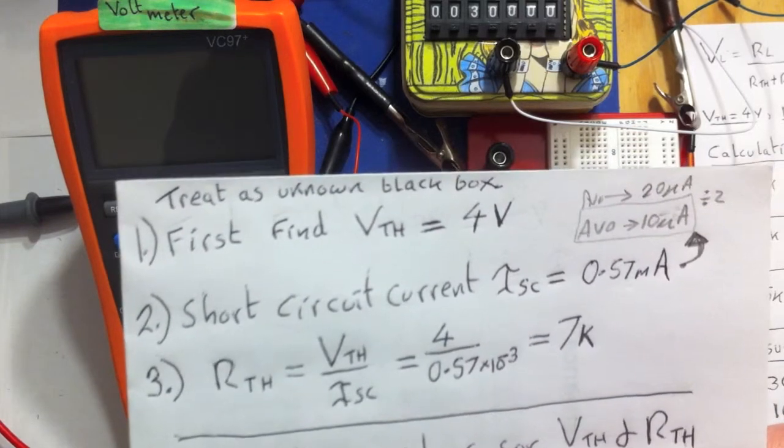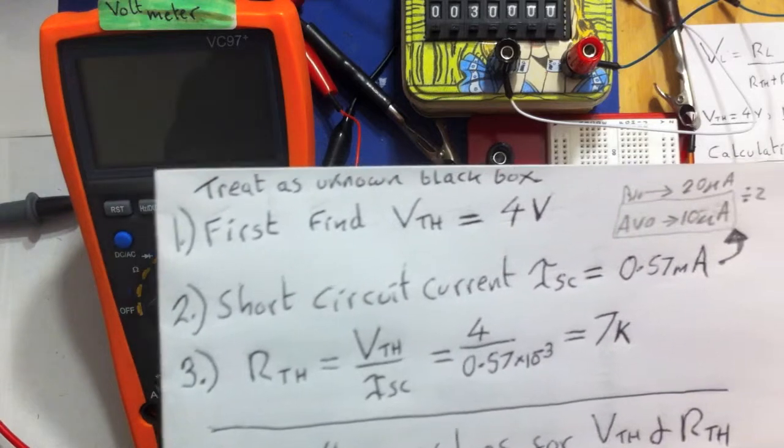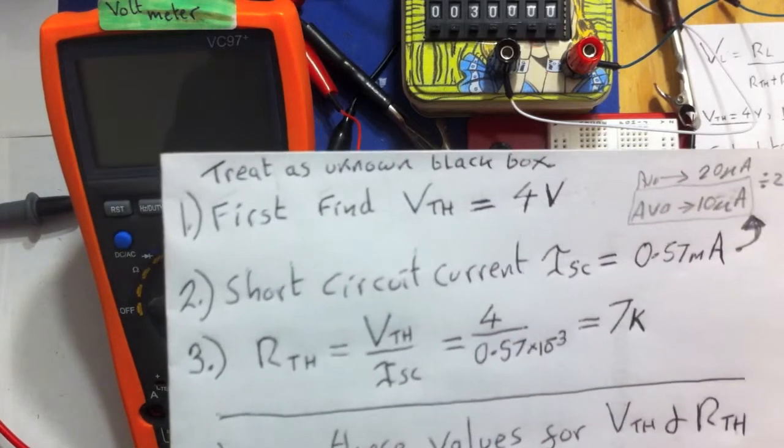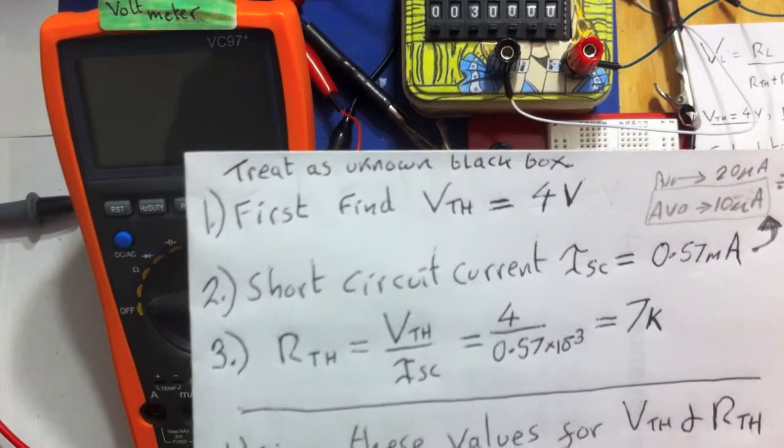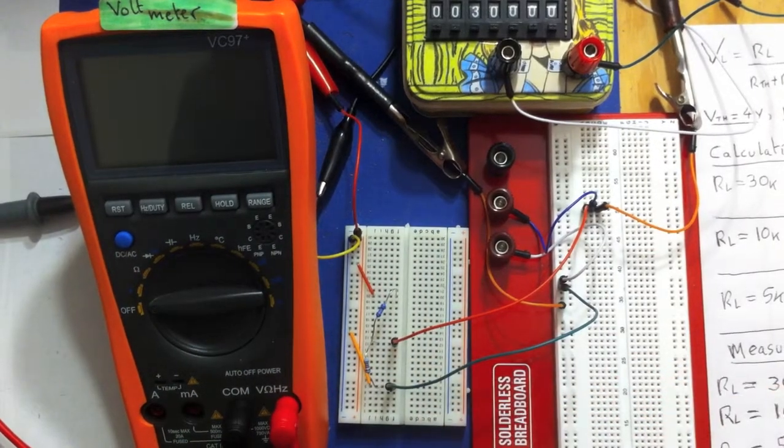That enables us then just by dividing the voltage by the short circuit current to get our measured Thevenin resistance, which is more or less 7k. So we've got our Thevenin voltage of 4 volts and we found our Thevenin resistance of 7k, and that was just measuring this as if it was a black box.